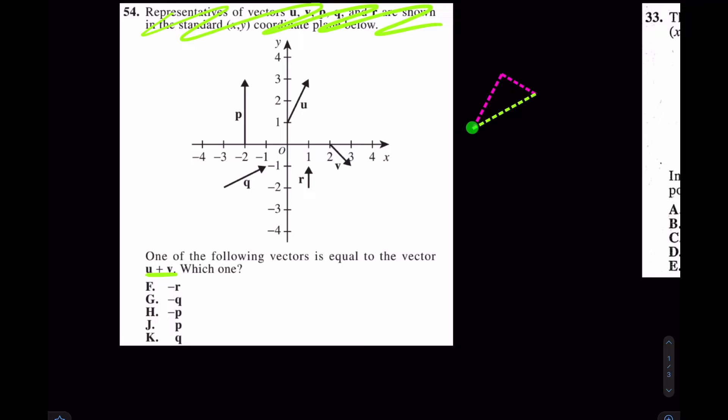Again, if I went vector u, and then I went vector v, instead of doing all that hullabaloo, what could I have just done all along? I could have just gone vector q. The answer here is k.